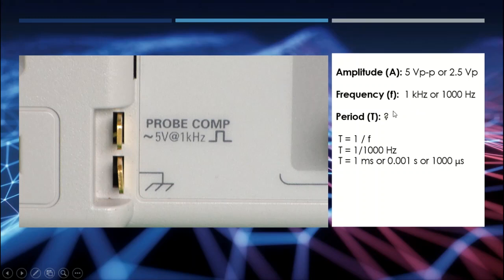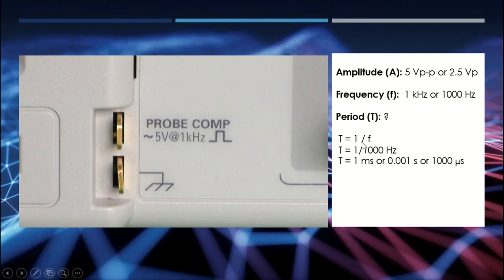Before we move further, we need just a little bit of math. The period of a signal — one cycle — is simply the inverse of the frequency. So in the case of this predetermined signal at 1000 hertz, the inverse gives us a period of one millisecond, or 0.001 seconds, or 1000 microseconds. You'll see where that becomes important.